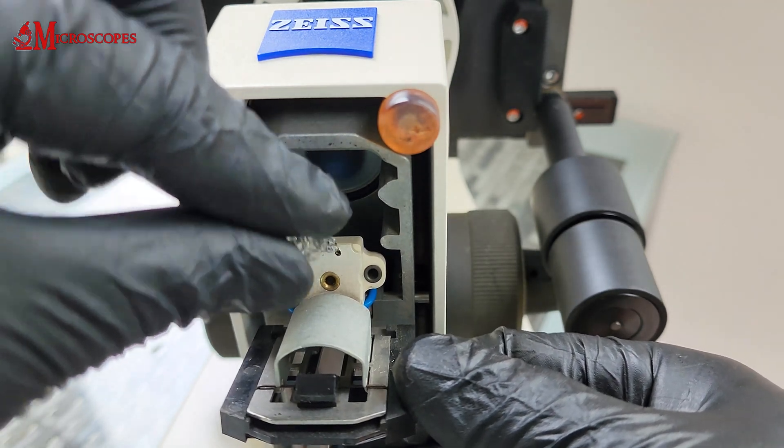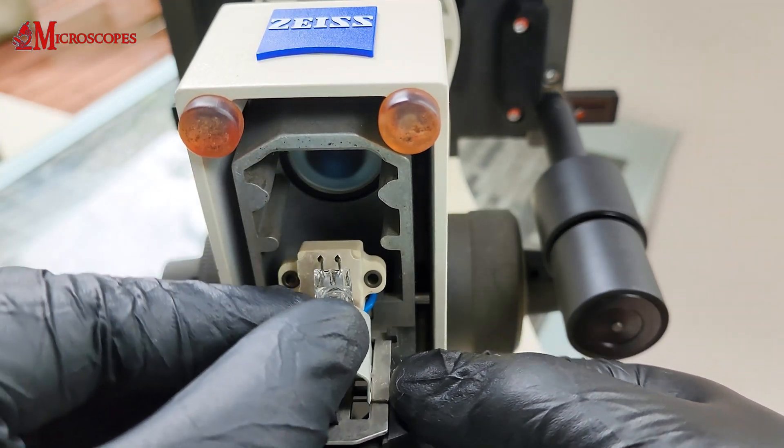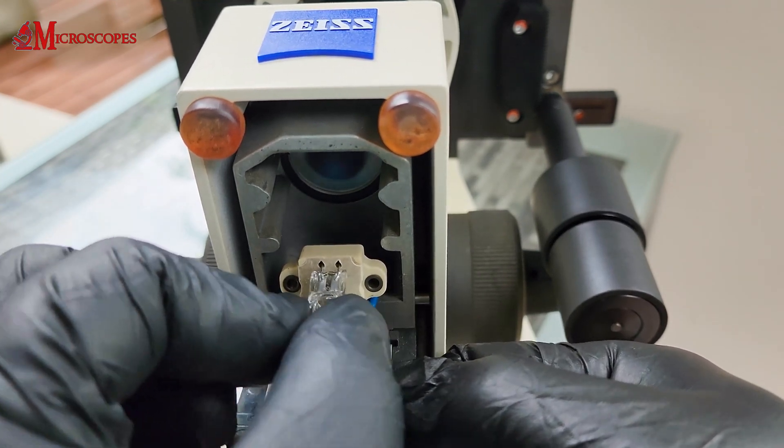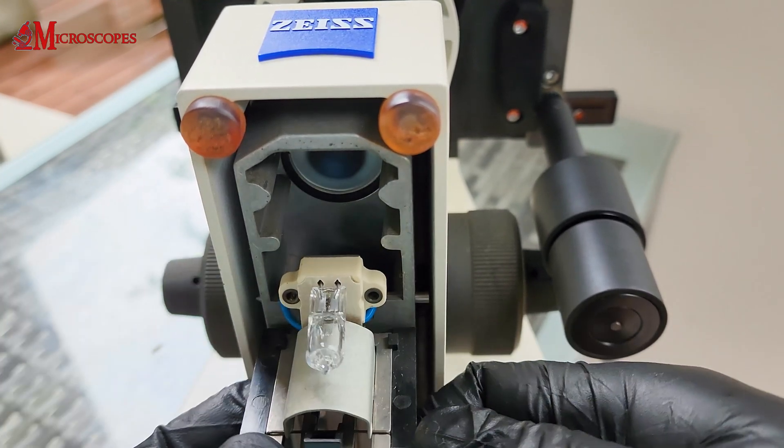Unclip the old halogen bulb from its socket. Install the new bulb. Avoid touching the glass part of the bulb with your bare hands as the oils from your skin can cause premature bulb failure.